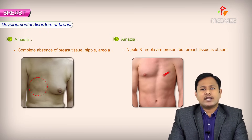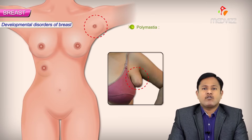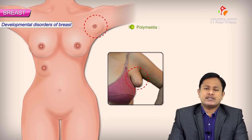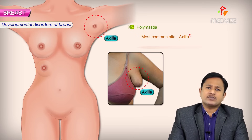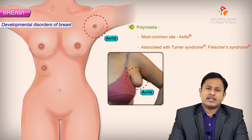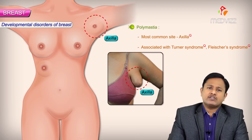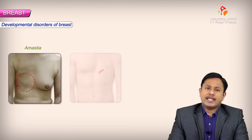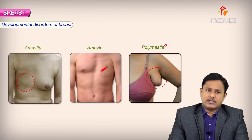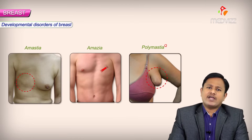We also have a condition called polymastia, where there is presence of multiple breasts. Multiple breasts are commonly seen in the axilla and are mainly associated with Turner syndrome and Flusher syndrome. So to summarize the congenital abnormalities: amastia, amazia, and polymastia.